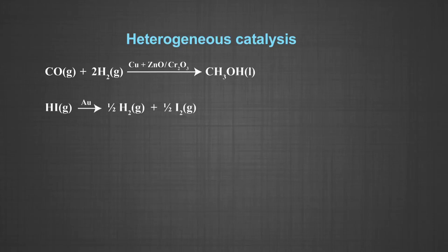Number seven, decomposition of hydrogen iodide on gold catalyst to produce molecules of hydrogen and iodine. Catalyst gold is in the solid form and the reactant hydrogen iodide is in the gaseous form.